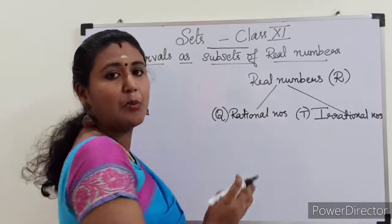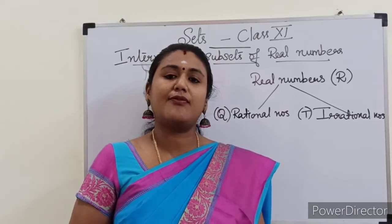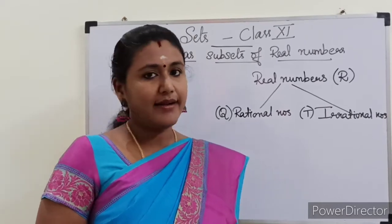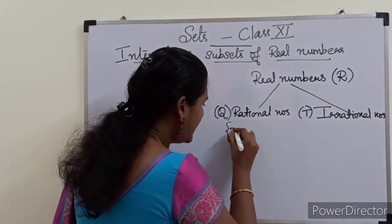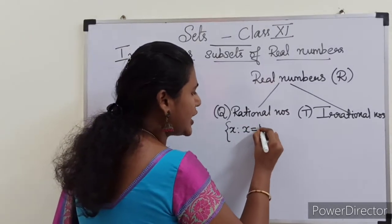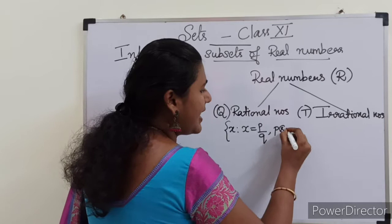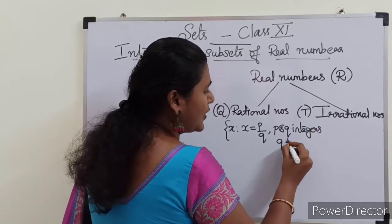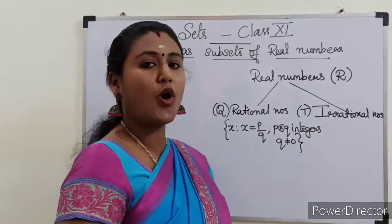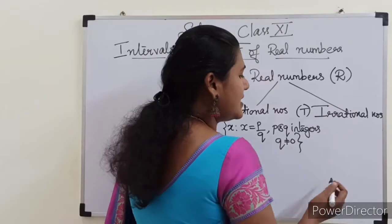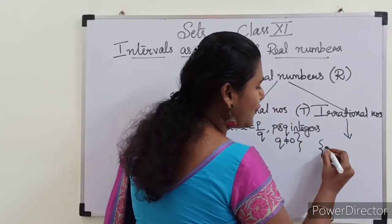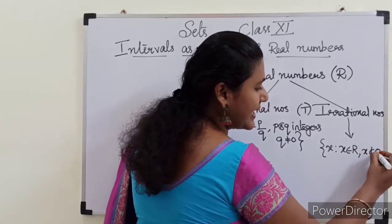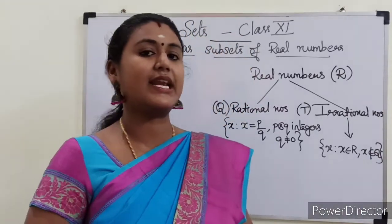A number which we can express in the form P by Q, where P and Q are integers and Q is not equal to 0, is called a rational number. We represent this as the set of all X such that X equals P by Q where P and Q are integers and Q ≠ 0. Irrational numbers are the set of all X such that X is a real number but X is not a rational number.